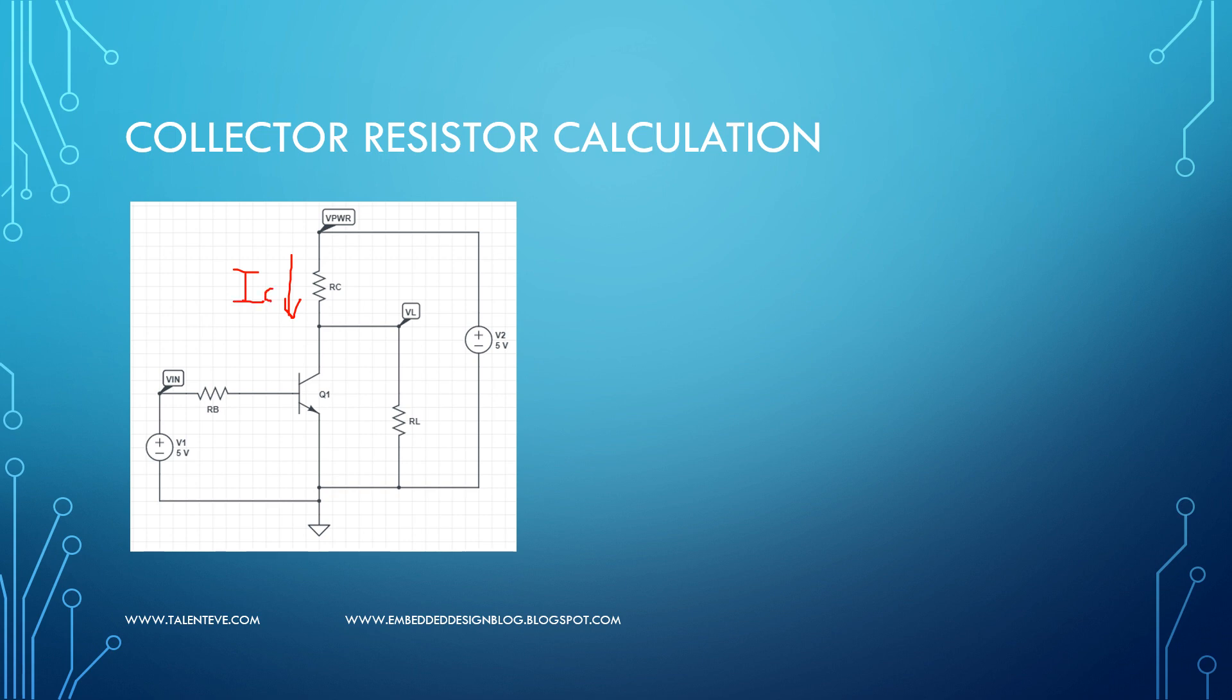So here we can say the current flowing through this is called the IC. So let us assume this load requires around 1 milliamp of current. Now considering this configuration, how we can calculate the current is this node voltage is nothing but V power. So V power is nothing but 5 volts here, as you can see the voltage source that is connected.